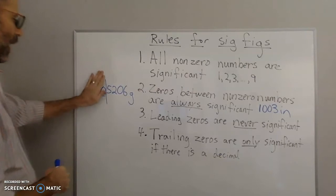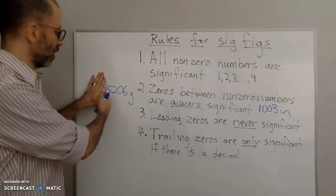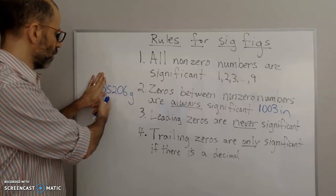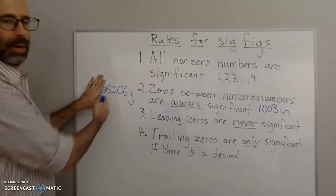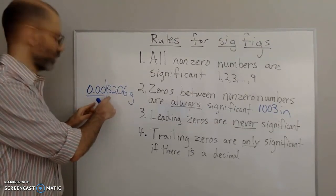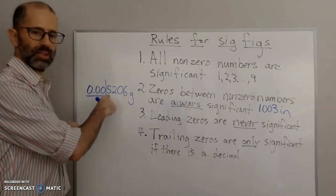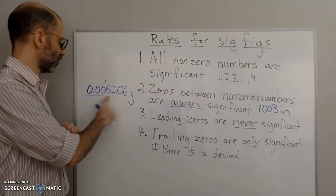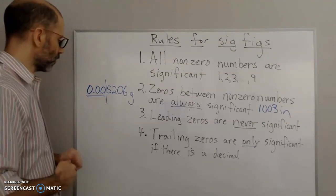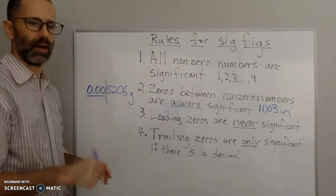Without those zeros, I would not know the place value. Is that 5 equal to 5,000? The zeros tell me the place value. With those two zeros, the 5 is in the thousandths place — tenths, hundredths, thousandths. That's why we have the zeros, but they're not significant. So that applies to any zeros at the front — never significant, never count them as significant figures.